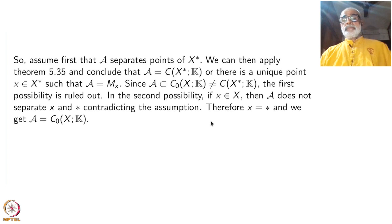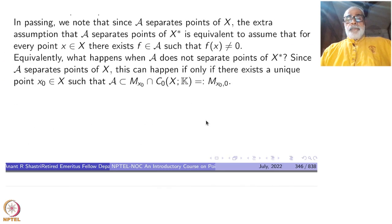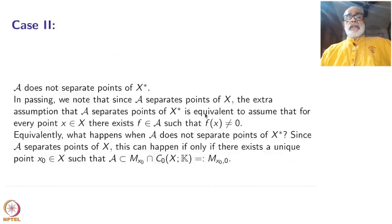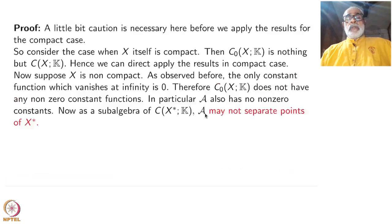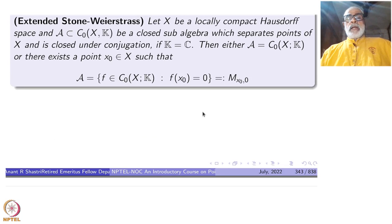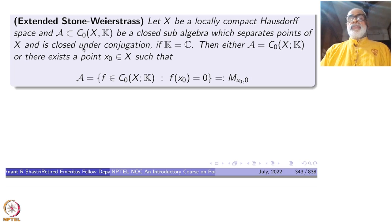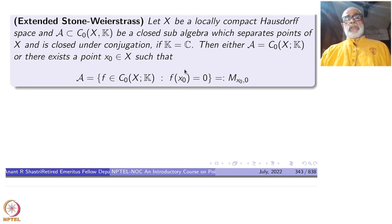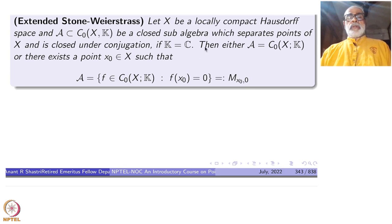This completes the proof of the theorem that for locally compact Hausdorff spaces, a closed subalgebra of C₀(X,k) satisfying the given hypotheses must either be all of C₀(X,k) or equal M_{x₀,0} for some x₀. This is the extended Stone-Weierstrass theorem. I do not say this is the only extension — there can be many other possibilities, and you can also look at Simmons' book for such versions.